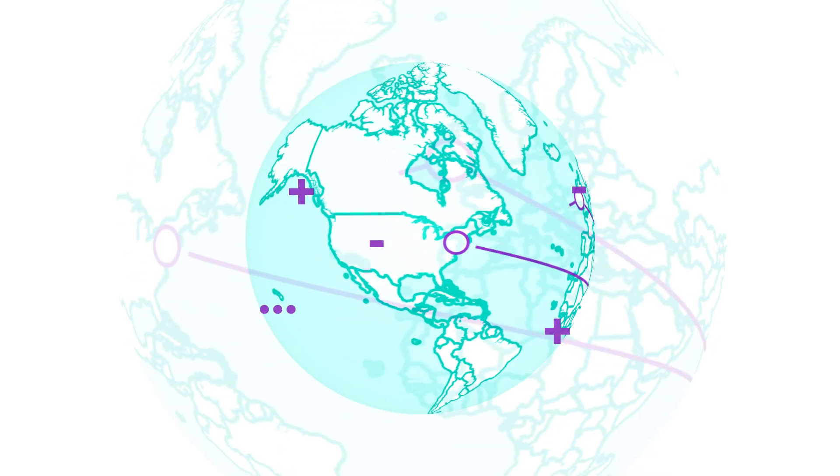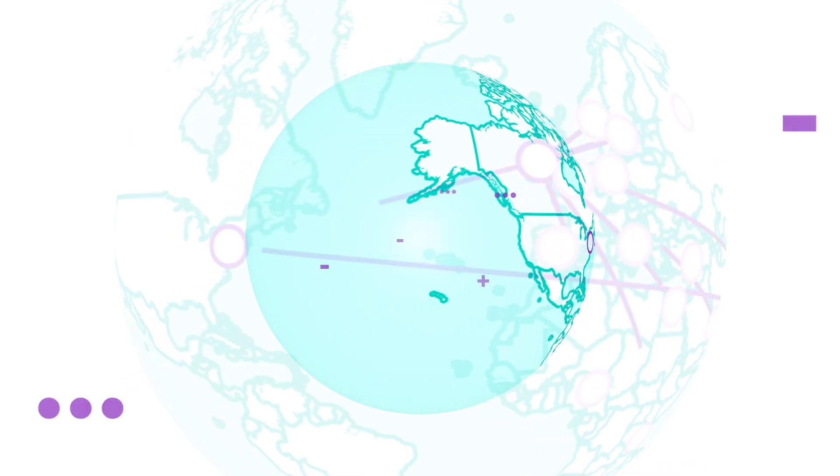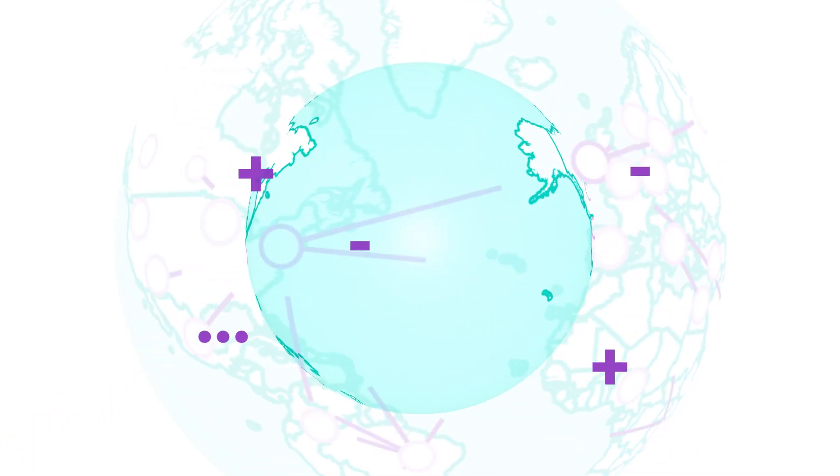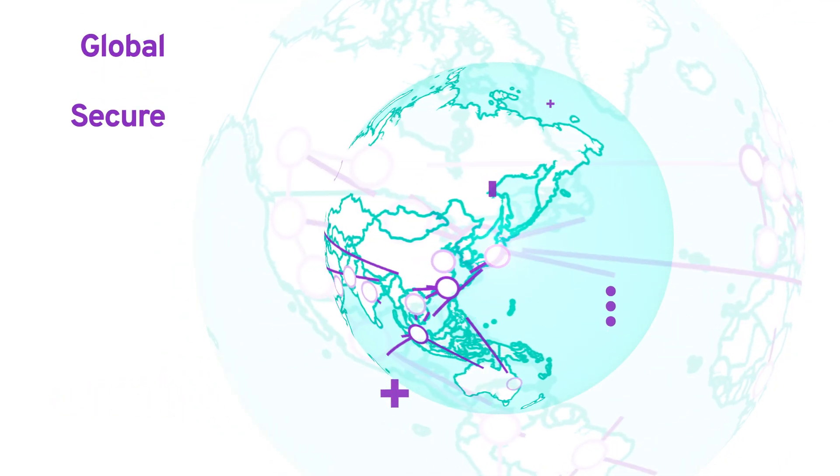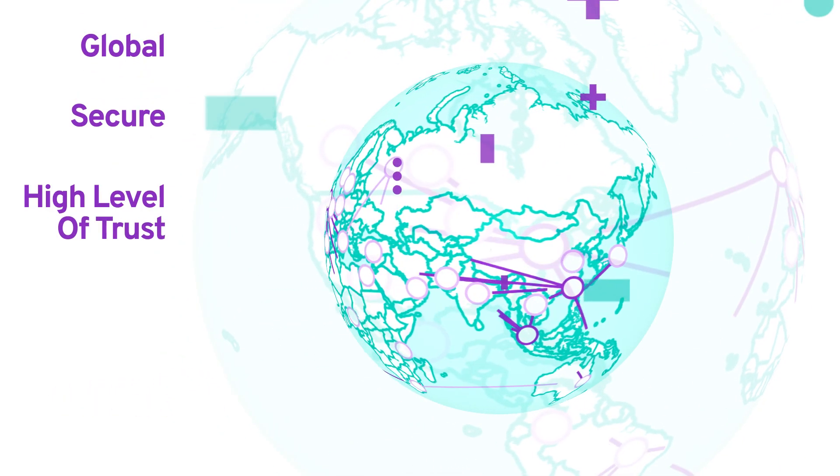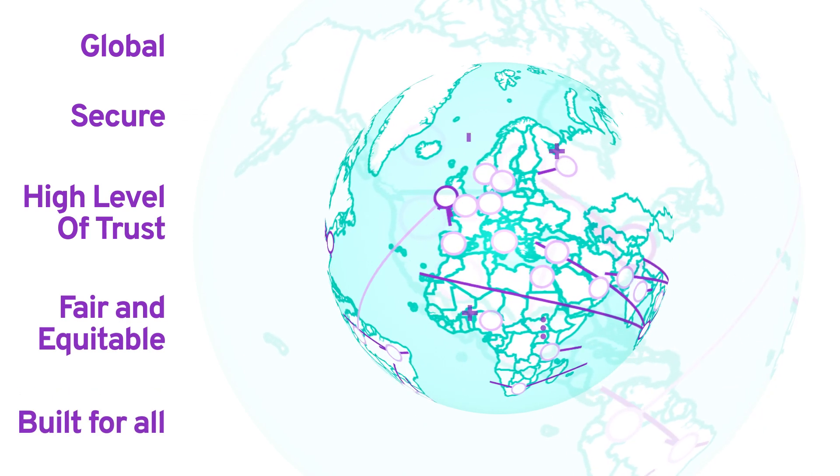Decentralization is a critical feature of public blockchains. By being fully decentralized, a public blockchain ensures that the network is global, secure, has a high level of trust, is fair and equitable, and is built for all.